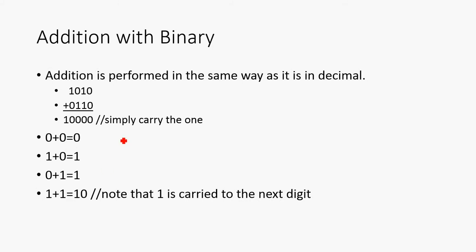So how do we perform addition with binary? Well, it's actually performed the same way that we perform addition in decimal. We simply add each digit. So 0 plus 0 is 0. 1 plus 0 is 1. 0 plus 1 is 1. And 1 plus 1 is 10, note that 1 is carried to the next digit. This is the way we represent 2 in binary, 1, 0. So the 1 is carried over to the next digit.